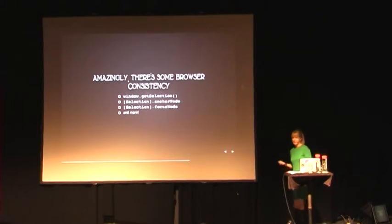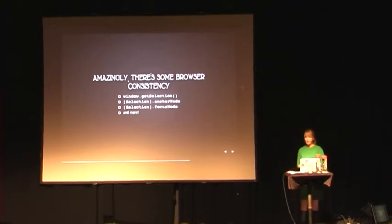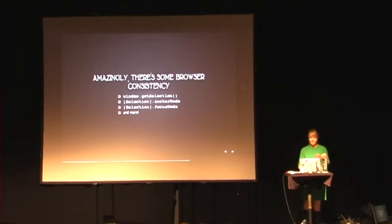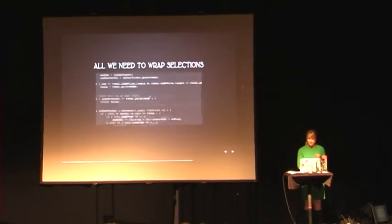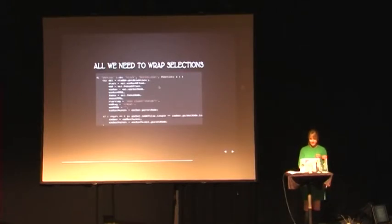Because you have a content editable area, your user can position the cursor and select text — that's all you need to do interesting things. You can insert markup at the cursor position or wrap a selection with tags. It's not a good alternative to exec command because it's easy — it's a good alternative because it works and there's browser consistency. We have the context selection API, which works consistently across modern versions of major browsers. window.getSelection gives you a selection object, with an anchor node and a focus node you can use to figure out where the selection is and what's inside it.